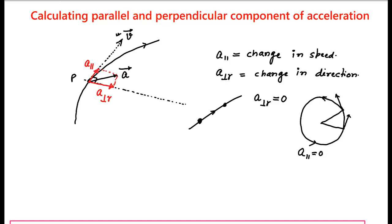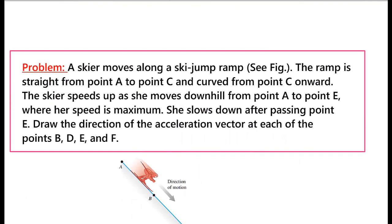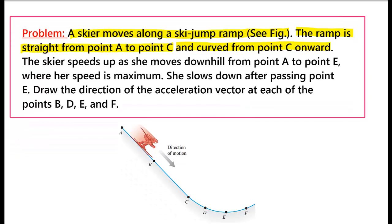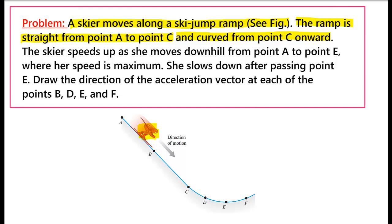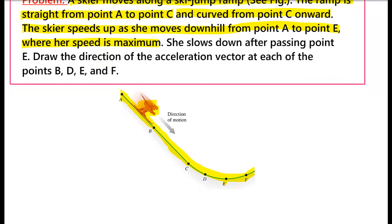Now we will illustrate all this using a problem. The problem says: a skier moves along a ski jump ramp as shown in the figure. The ramp is straight from point A to point C and curved from point C onwards. So this ramp has two portions: one is a curved portion and another is a straight portion. As stated, point A to point C is the straight portion. Kaira speeds up as she moves downhill from point A to point E, and her speed is maximum at point E.